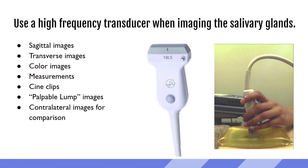When imaging the parotid glands, we want to use a high-frequency linear transducer. We'll get sagittal images working from a posterior to anterior approach, and transverse images working superior to inferior. We'll use color imaging to identify any hypervascularity or dilated ducts, grab measurements of the glands, take cine clips if needed, and if the patient has a palpable lump, capture images to correlate what the patient is feeling with what we're seeing.